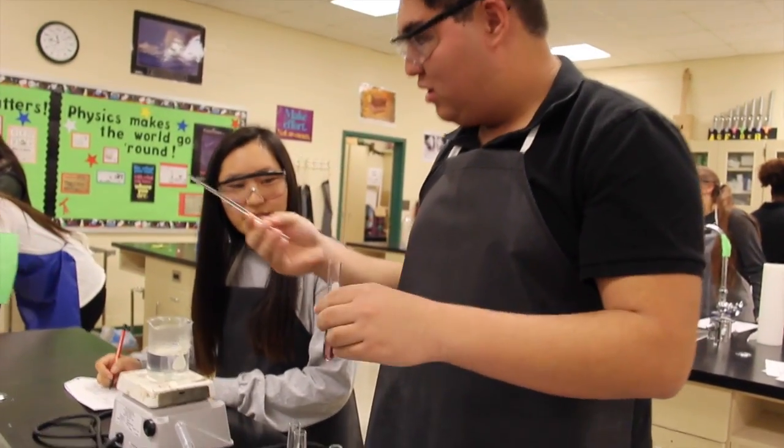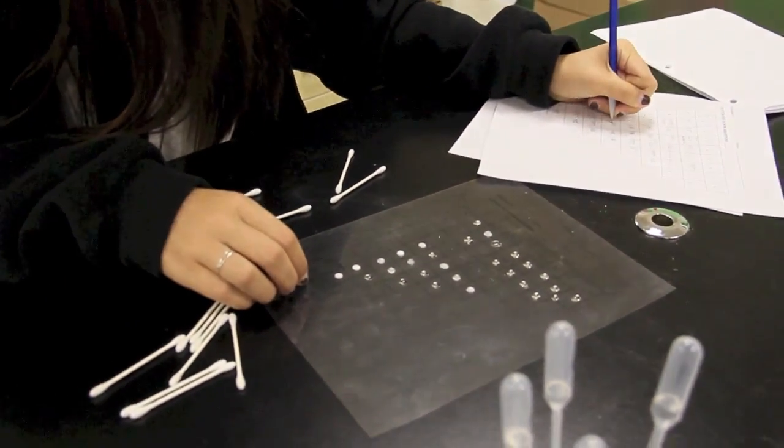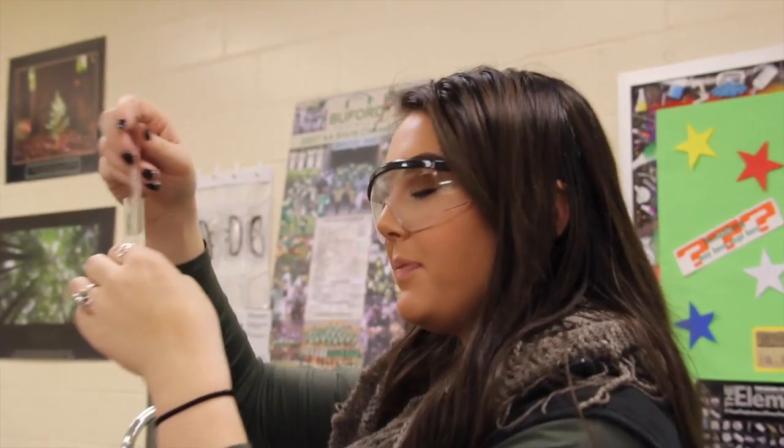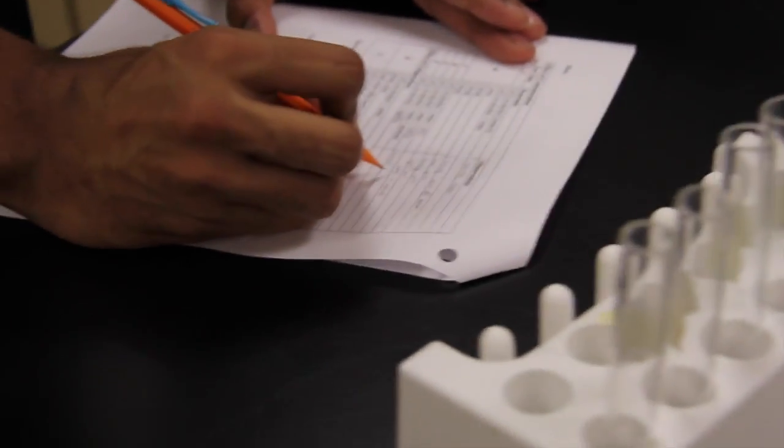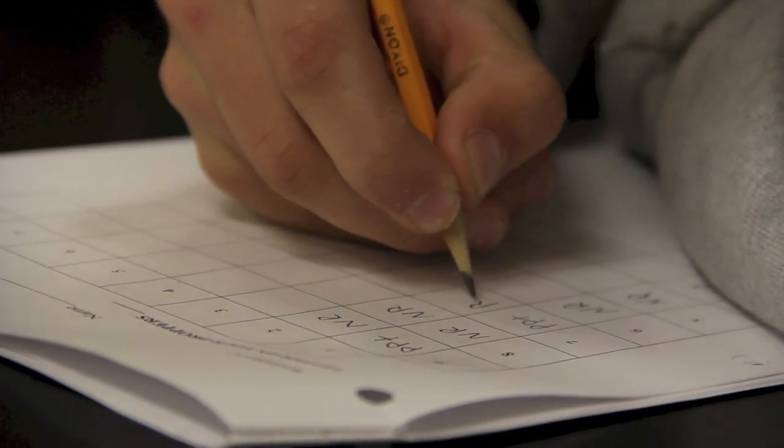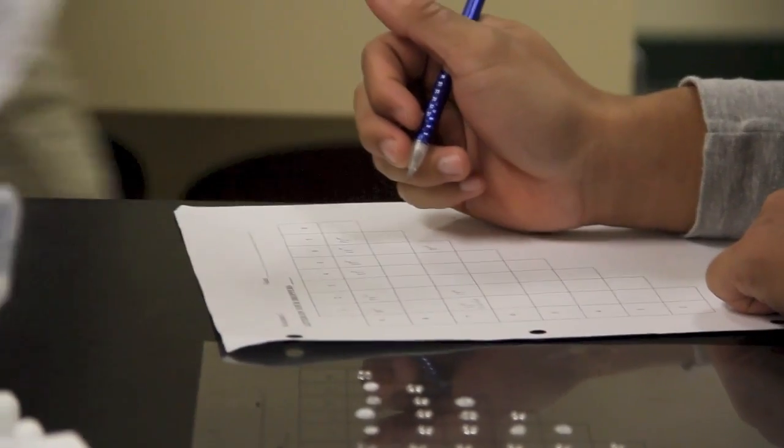AP Biology is structured around four big ideas, enduring understandings, and science practices. Students develop an appreciation for the study of life and identify and understand unifying principles within a diversified biological world. The process of inquiry and developing critical thinking skills are vital components of AP Biology.